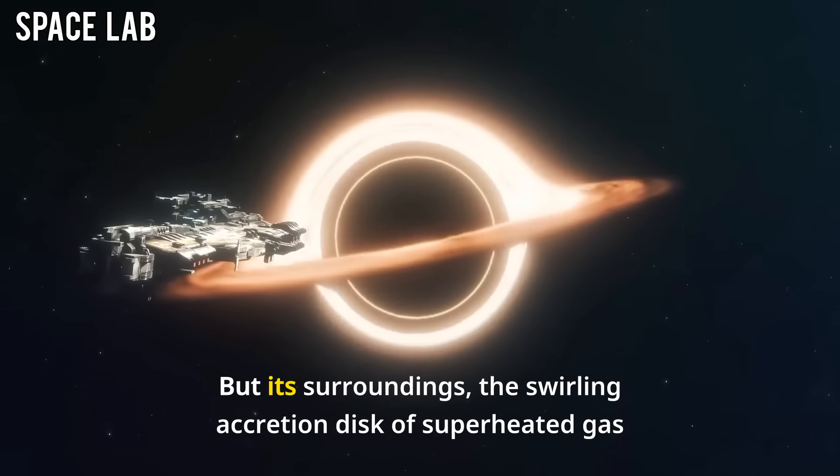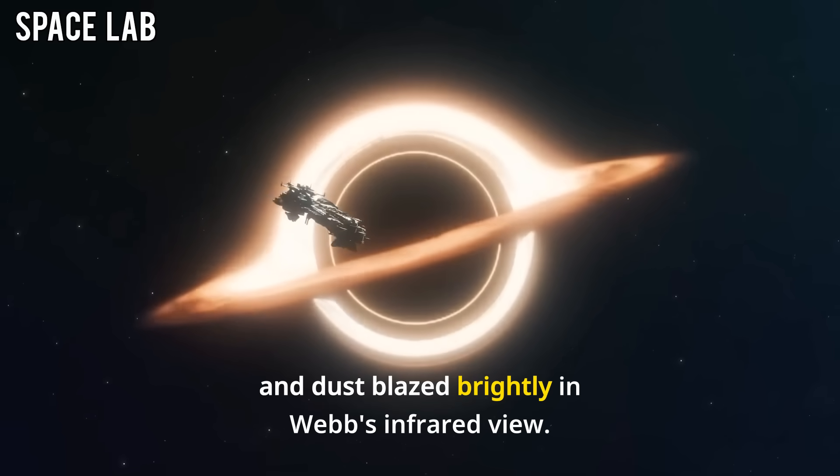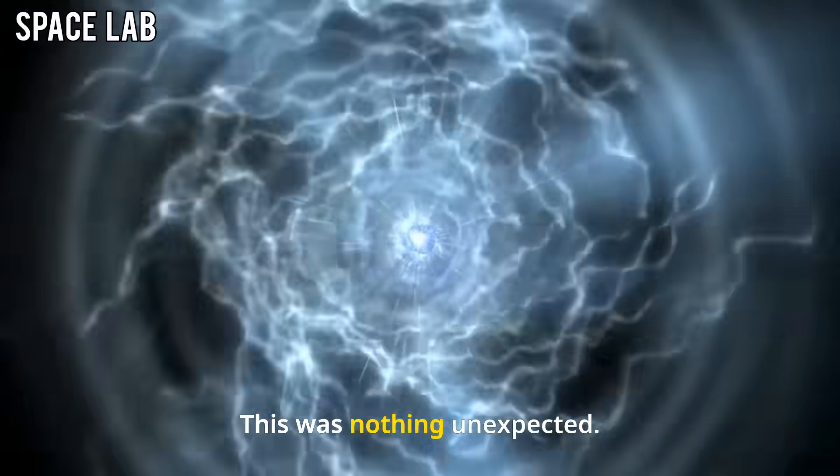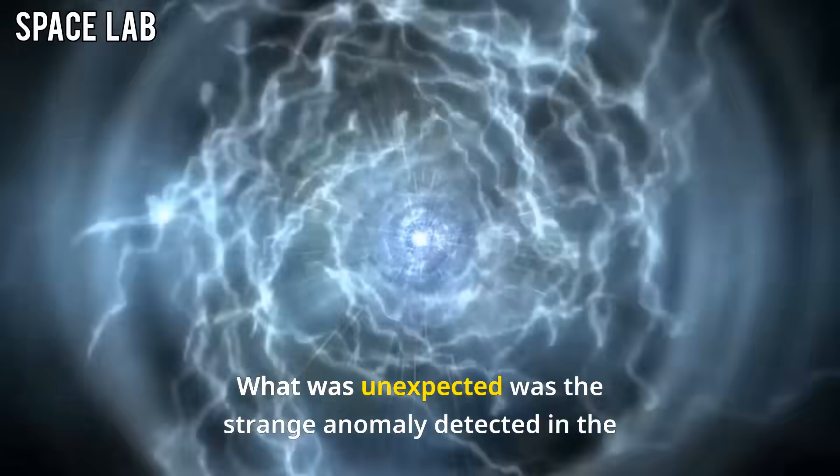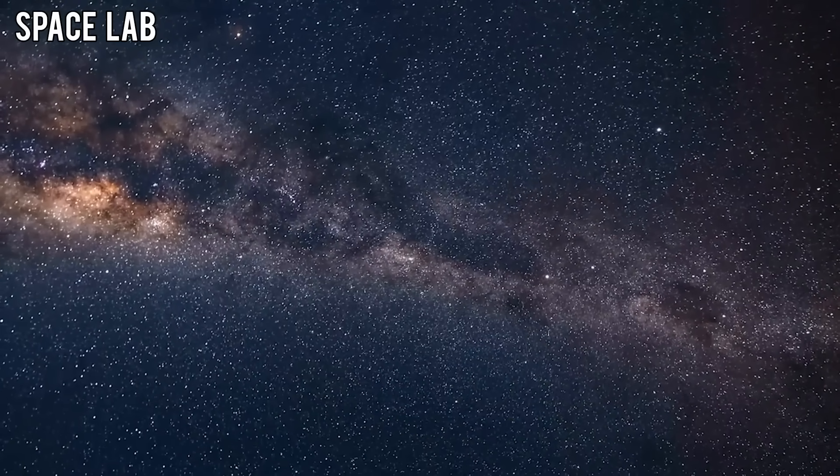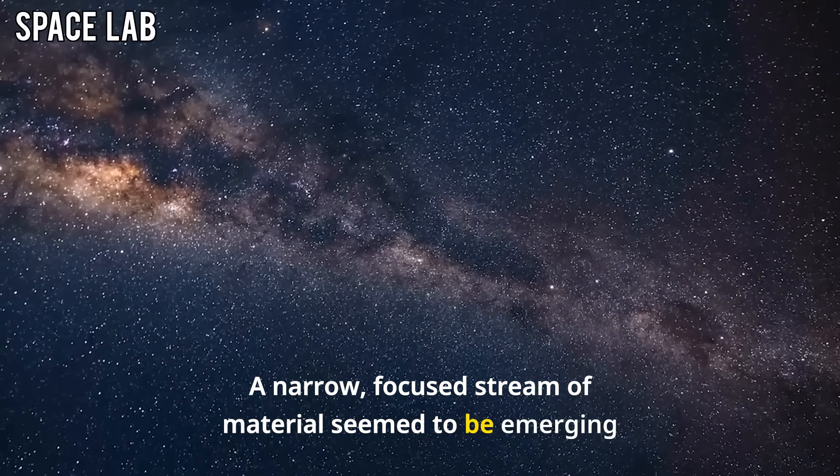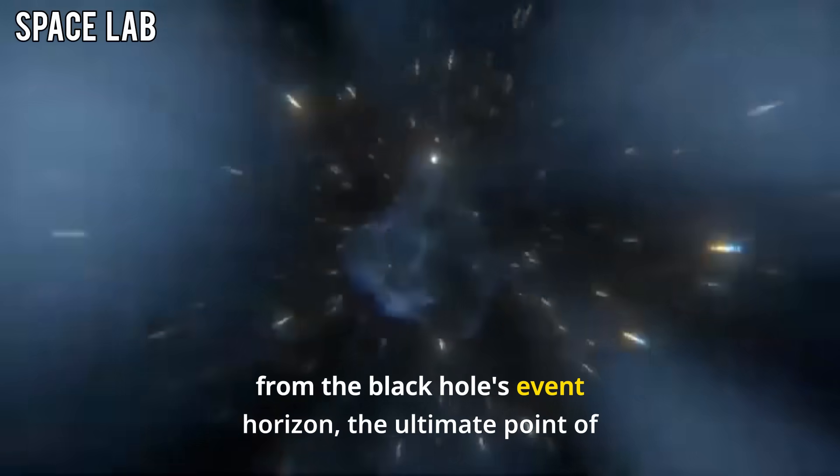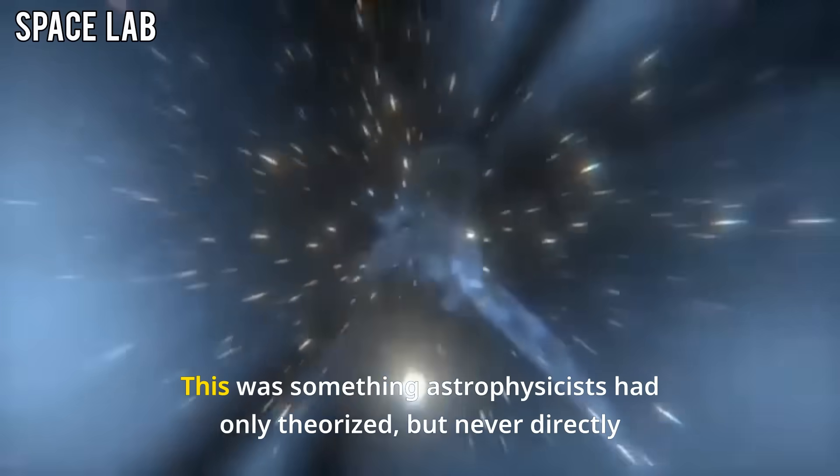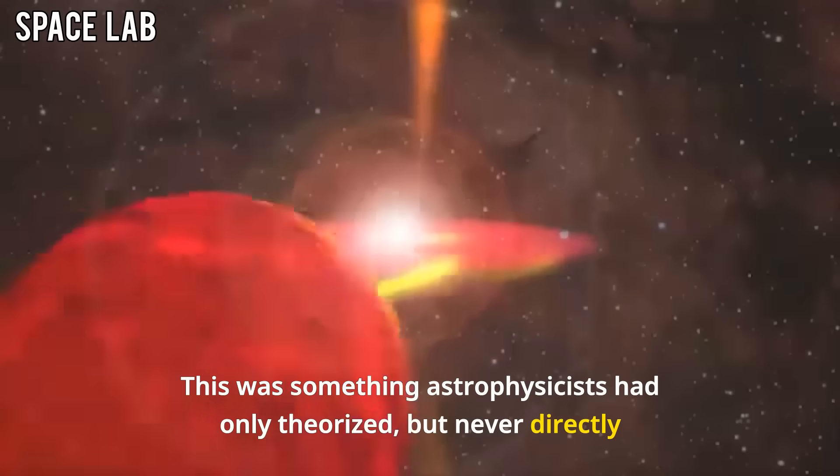The black hole itself was, of course, invisible. But its surroundings, the swirling accretion disk of superheated gas and dust, blazed brightly in Webb's infrared view. This was nothing unexpected. What was unexpected was the strange anomaly detected in the frames: a narrow, focused stream of material seemed to be emerging from the black hole's event horizon, the ultimate point of no return. This was something astrophysicists had only theorized but never directly seen.